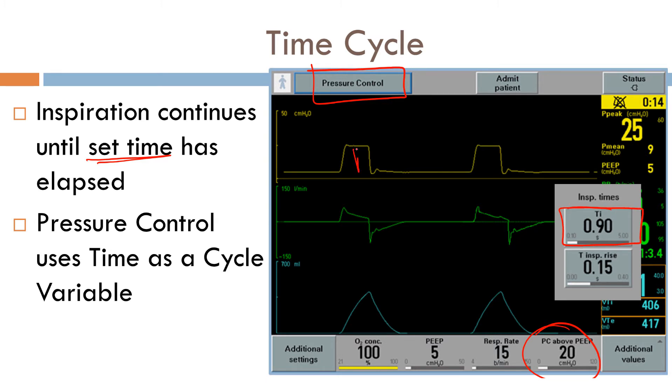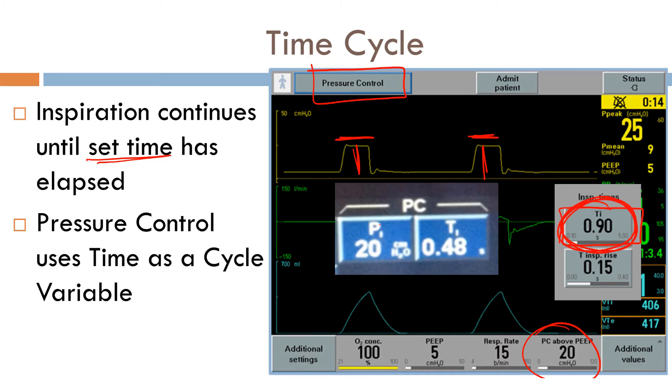So here we can see the amplitude is exactly set. This is our target variable, pressure. It's exactly the same height. However, the duration of each breath is exactly the same. Why? Because each breath is exactly 0.9 seconds. In the Puritan Bennett, here's your target variable. And this has set the duration or the inspiratory time to 0.48 seconds.